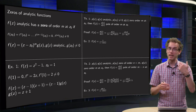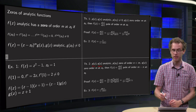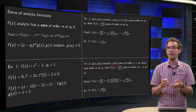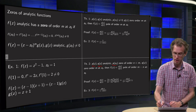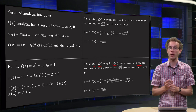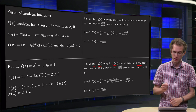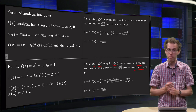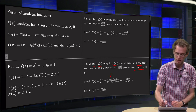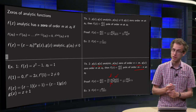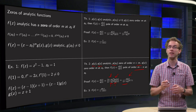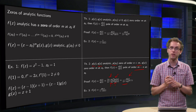What happens if your numerator is also zero at z-zero? Suppose P and Q are both analytic, P of z-zero has a zero of order N, and Q has a zero of order M, where N is smaller than M. Then the quotient has a pole of order M minus N. This is because you can write P as (z minus z-zero) to the power N times G1, and Q as (z minus z-zero) to the power M times G2, and you are left with some analytic phi of z divided by (z minus z-zero) to the power M minus N.